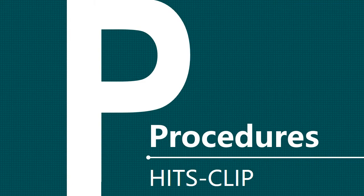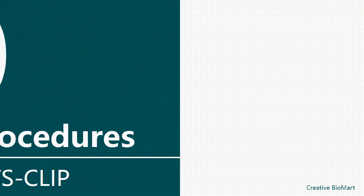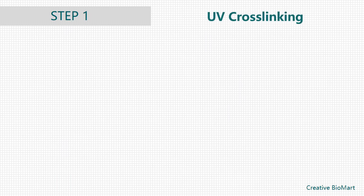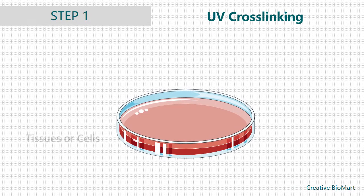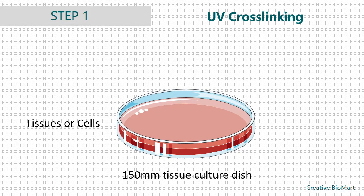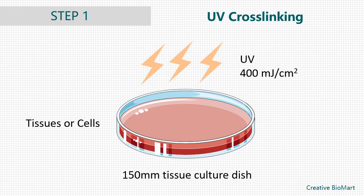Next, detailed procedures of HITS-CLIP method. Step 1, Ultraviolet Cross-linking. Harvest target tissues or cells. Place the tissue suspension in a 150 mm tissue culture dish and irradiate the suspension for 400 mJ per square centimeter. Use a dish of ice underneath the tissue suspension as you cross-link, to keep the suspension cold.